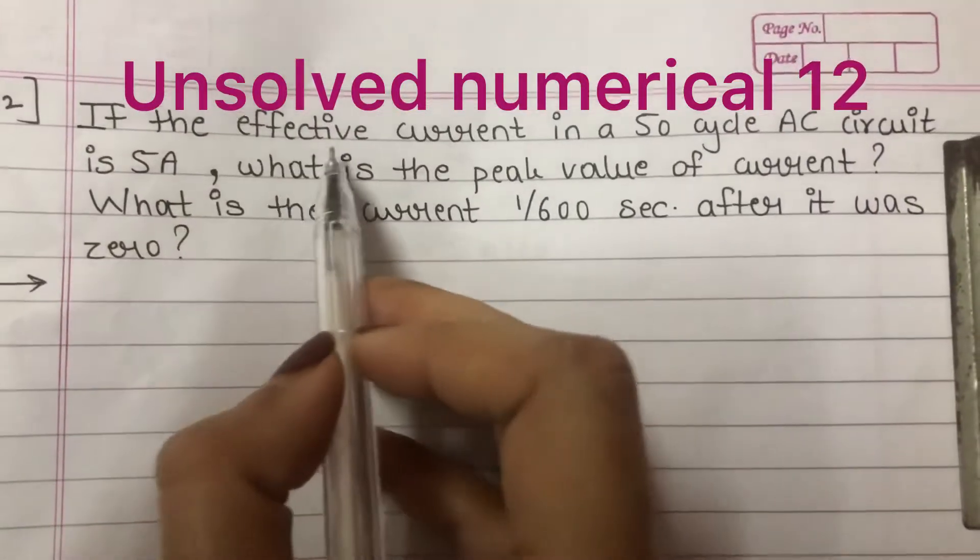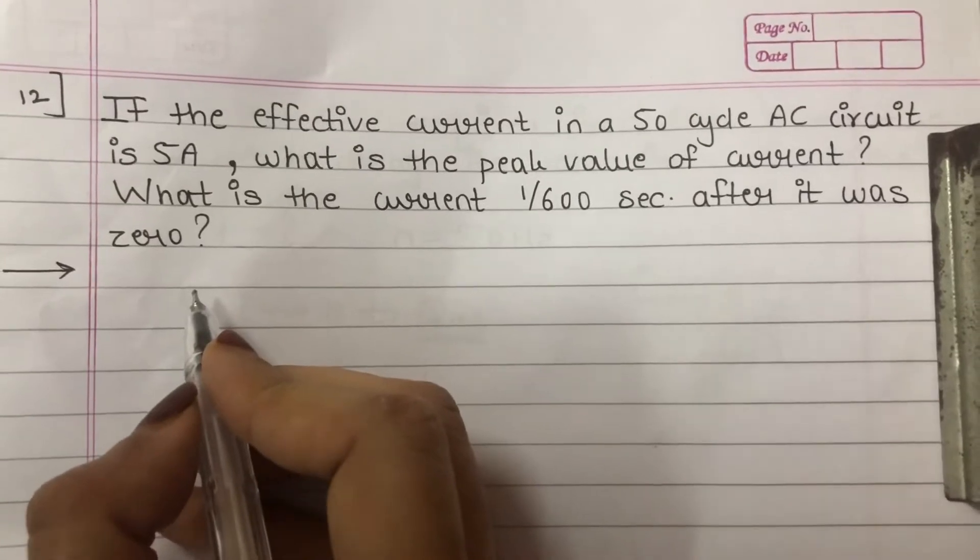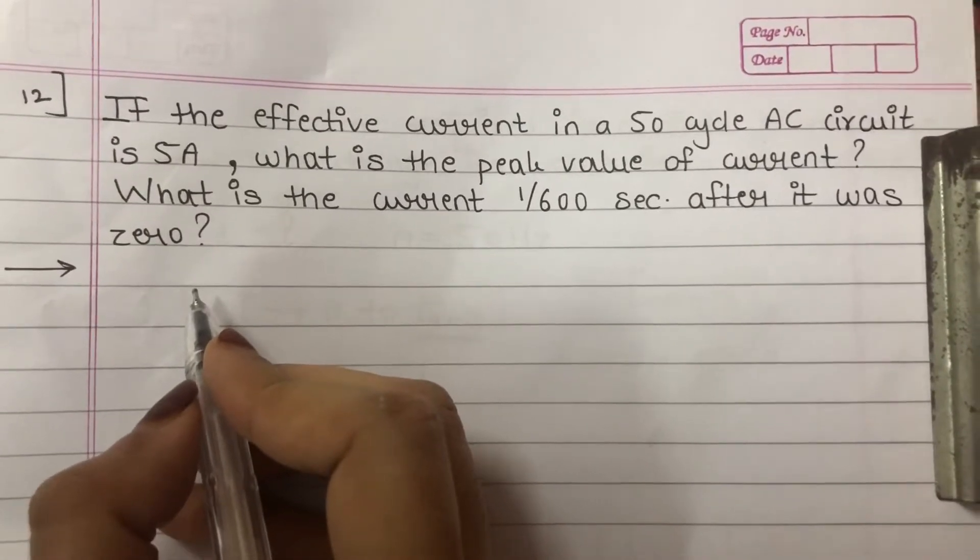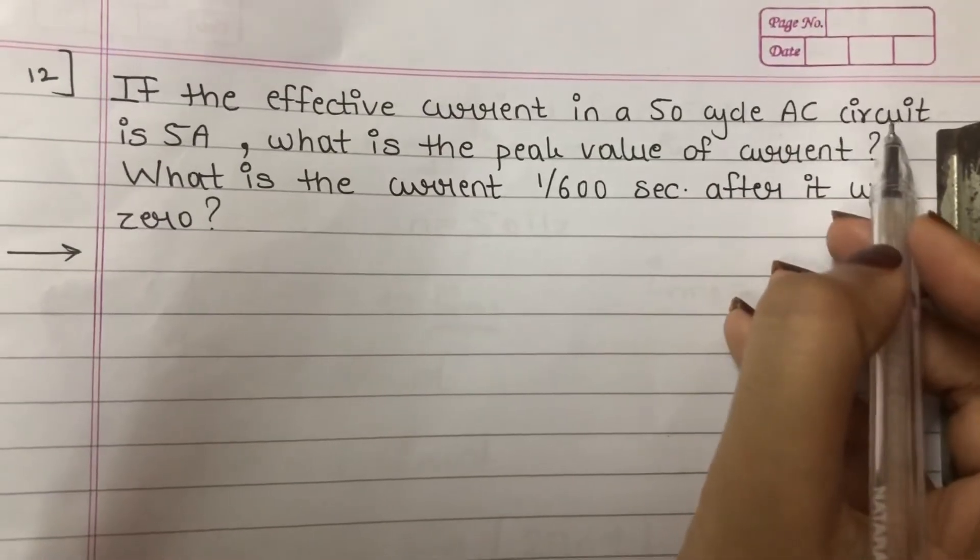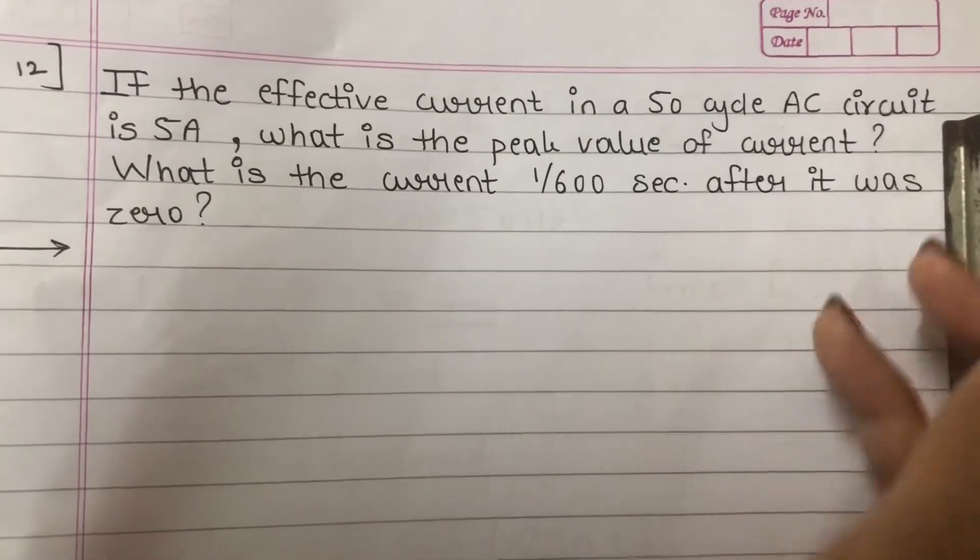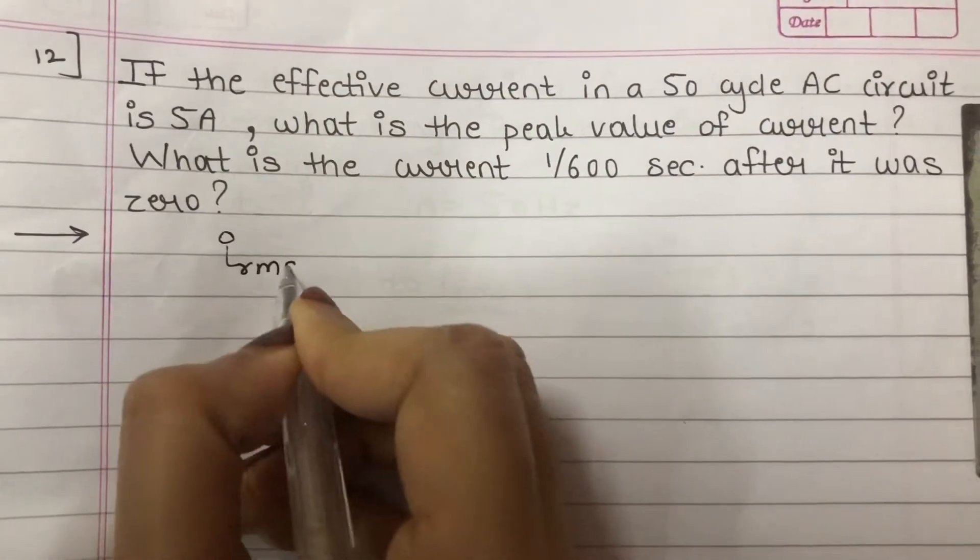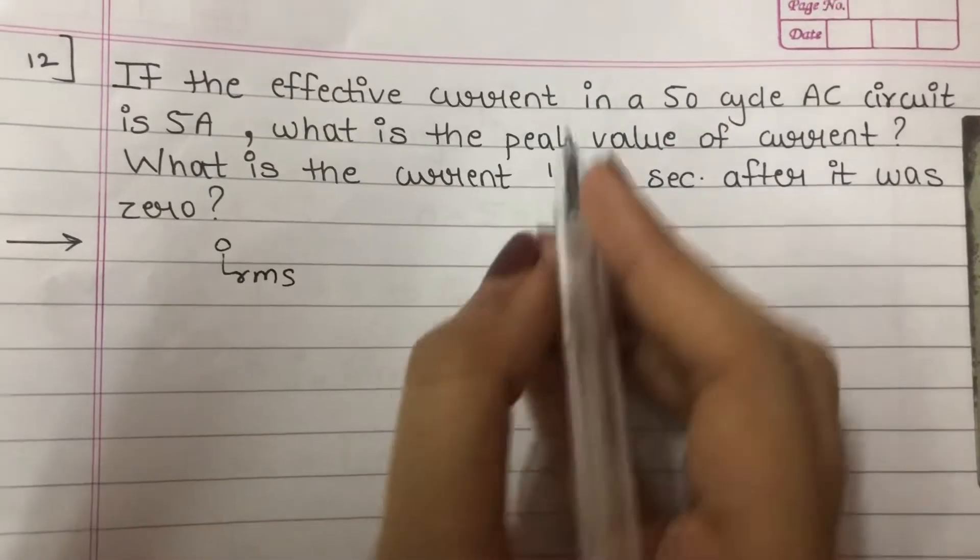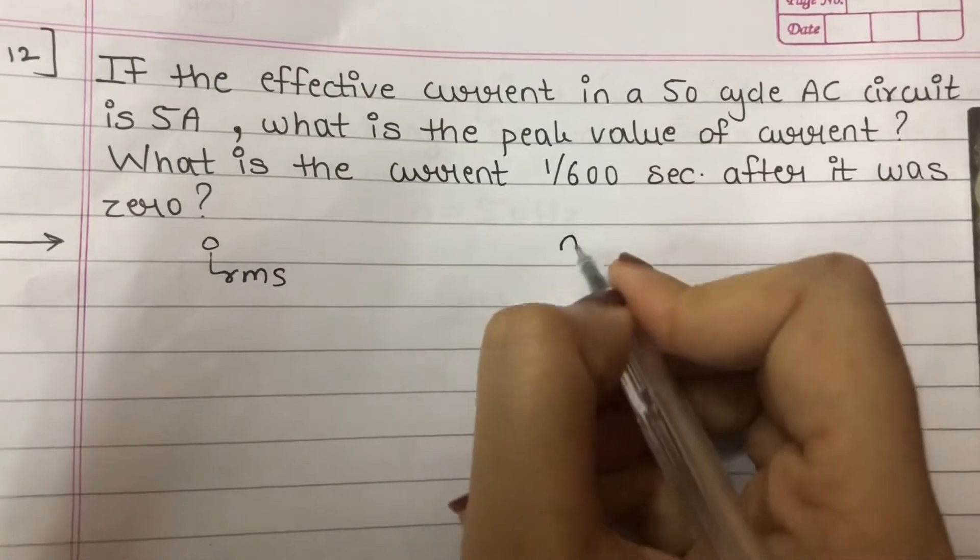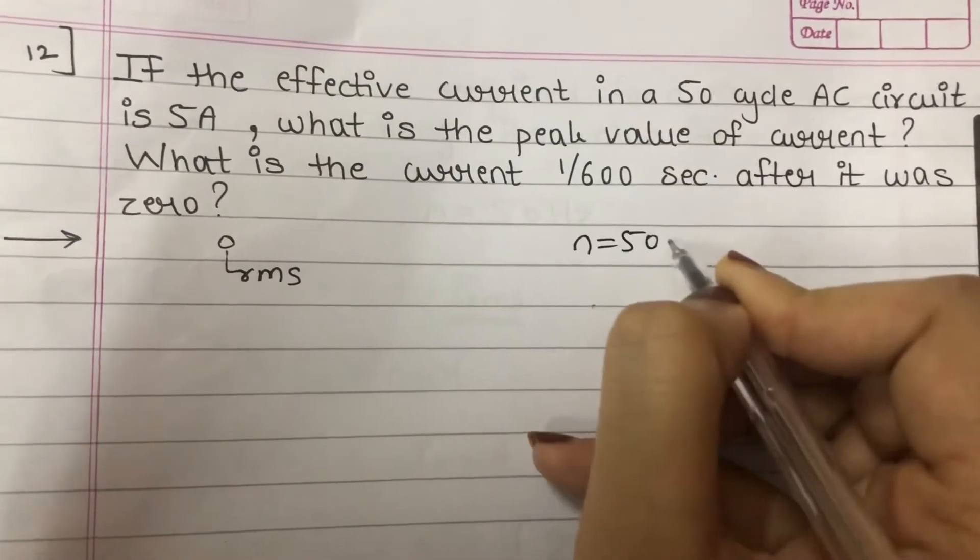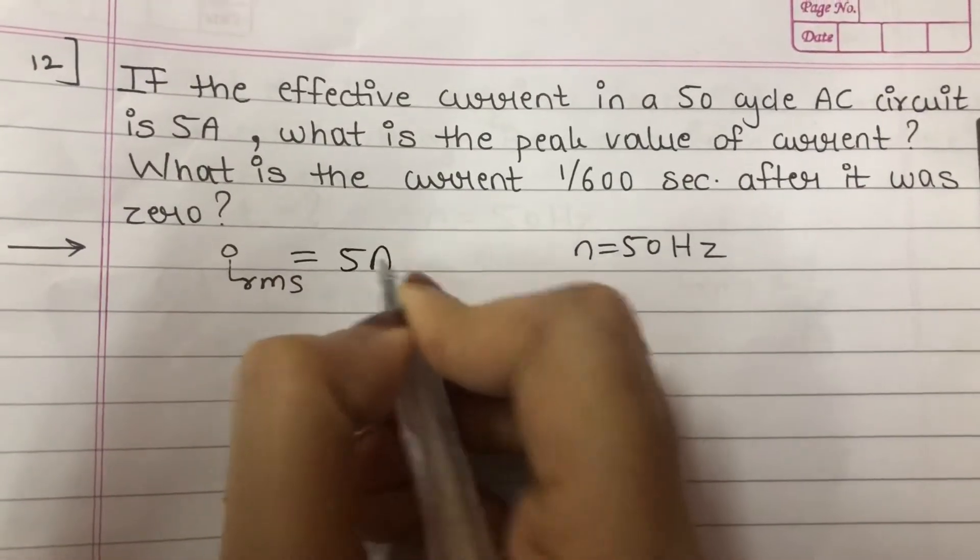Starting with problem number 12. If the effective current - effective current is also known as RMS value of the current or the total value of the current. In this AC circuit chapter or alternating current topic, effective current is I_rms, RMS value of the current. If the effective current in a 50 cycle AC circuit, 50 cycle means frequency is given to us, that is 50 Hertz, is 5 Ampere. So RMS value of the current is 5 Ampere.